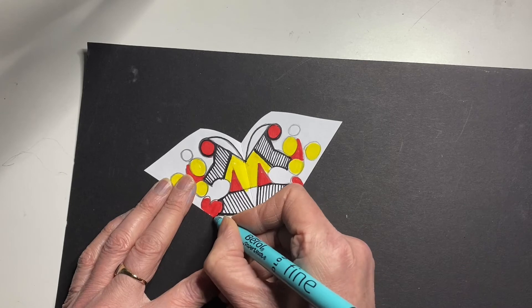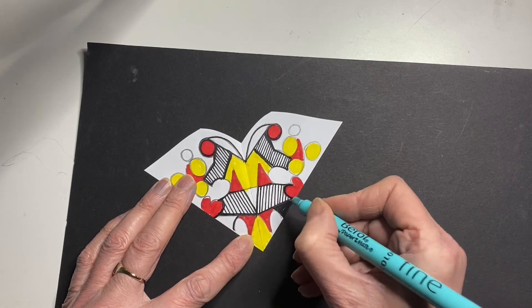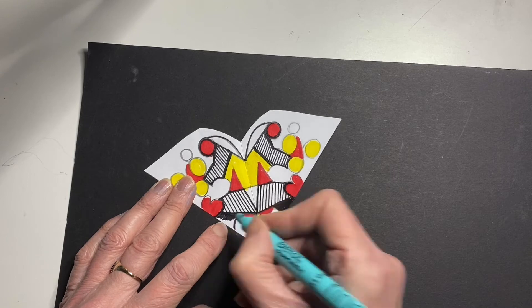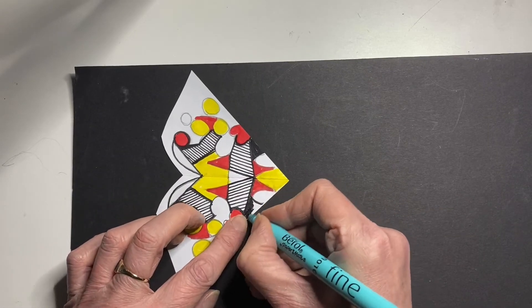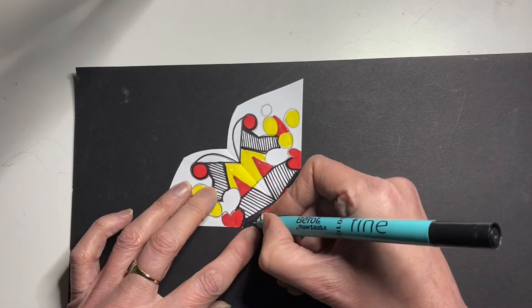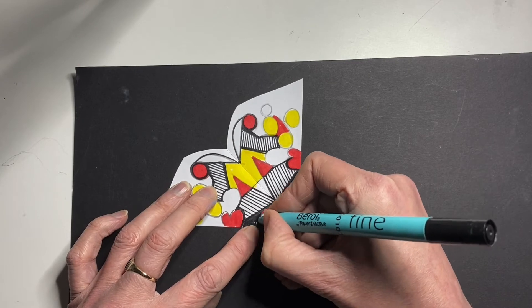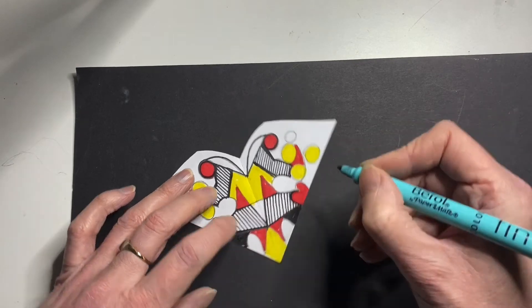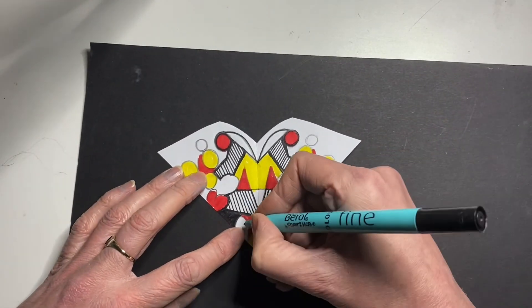So I'm going to do that. I'm going to continue this line. See I'm working on one side and the other. So I'm not finishing one section, one side. I'm doing a little bit at a time and then do the mirror symmetry so I can keep up to date with where I am and not get confused.